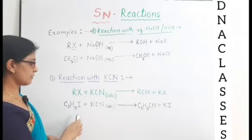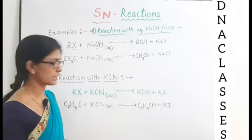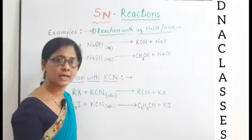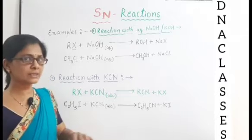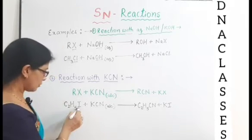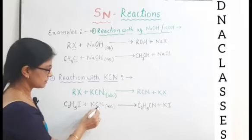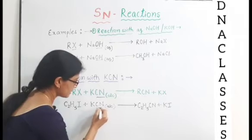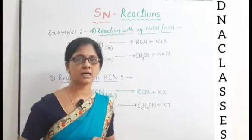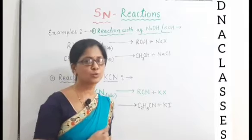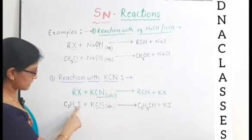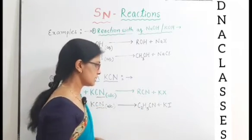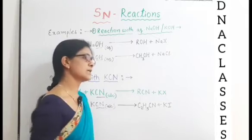So C2H5I plus KCN potassium cyanide, you will get C2H5CN plus KI. In this reaction also there is substitution of halogen part by the nucleophile. In this example the nucleophile is CN. Cyanide ions are acting as a nucleophile. Yeh cyanide ions is halogen ko substitute kar rahe hai. Product ban raha hai C2H5CN or you can say RCN.